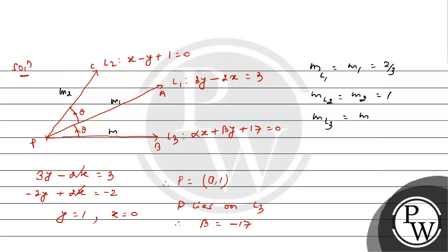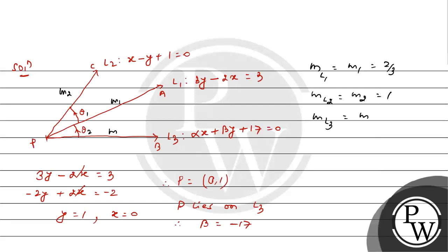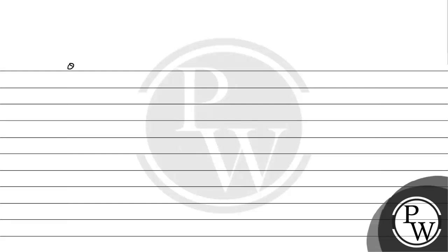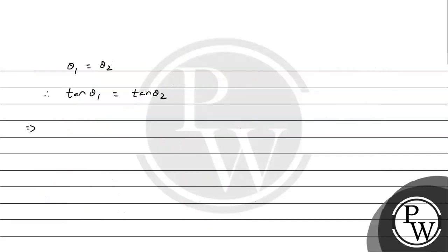Since L1 is the angular bisector, angle between A, P, C must equal angle between A, P, B. Therefore theta1 equals theta2. So theta1 equals theta2, therefore tan theta1 must equal tan of theta2.